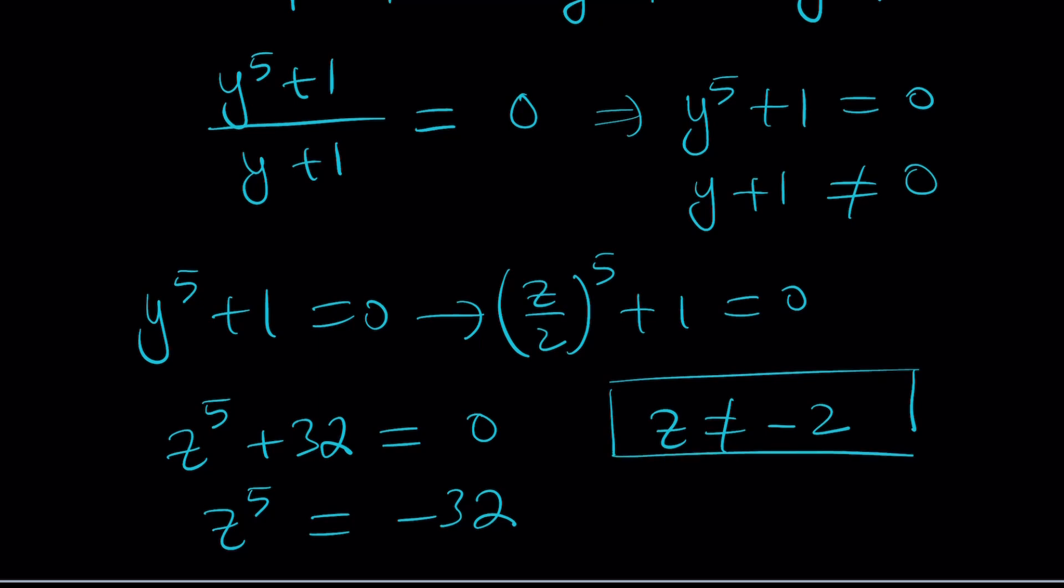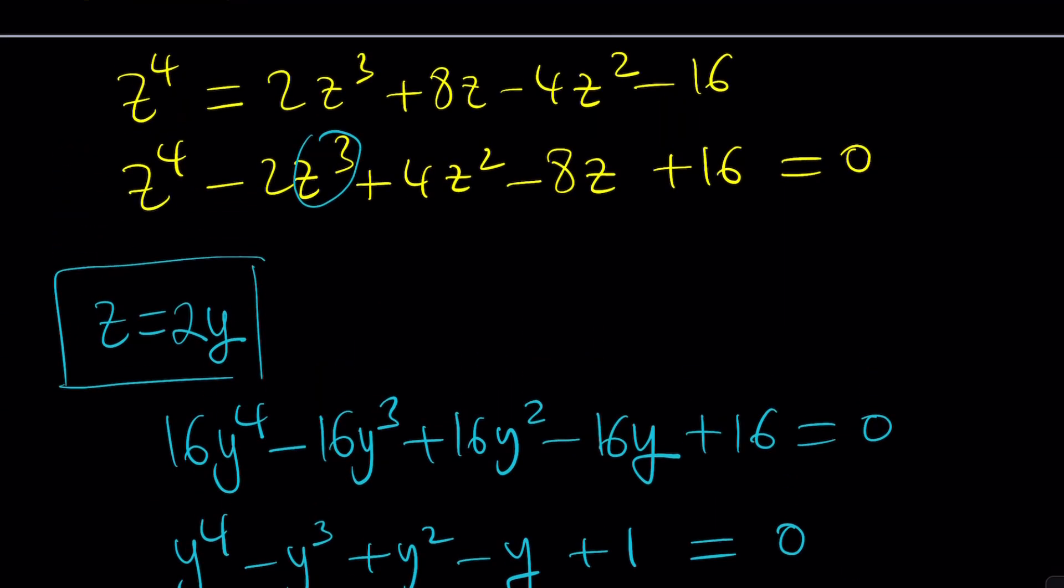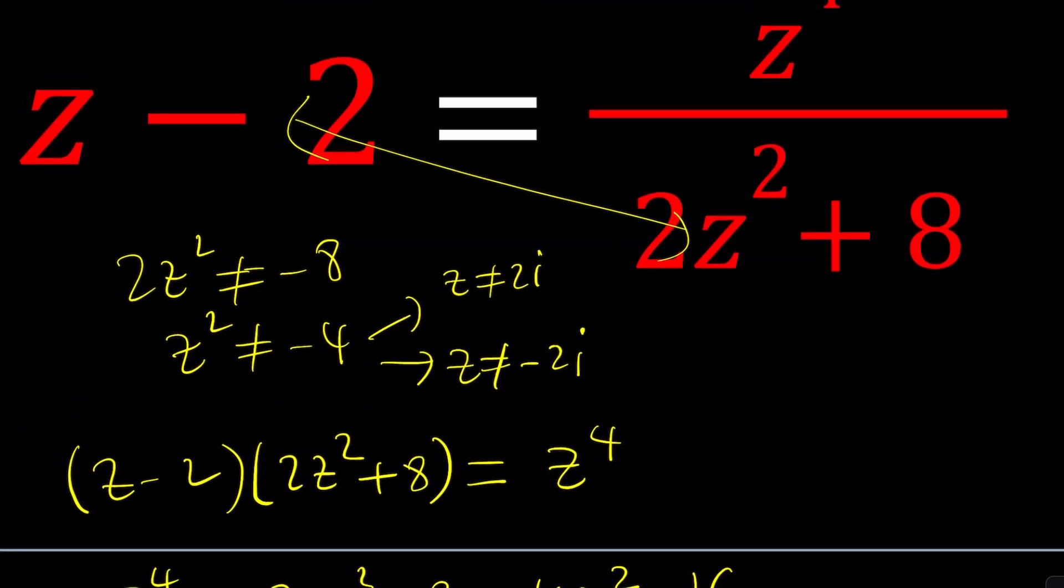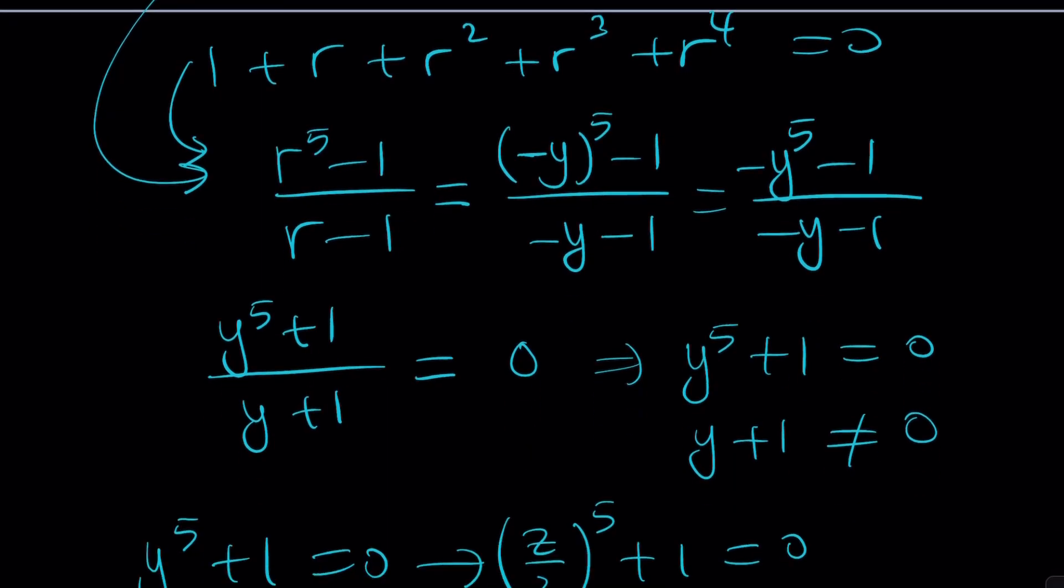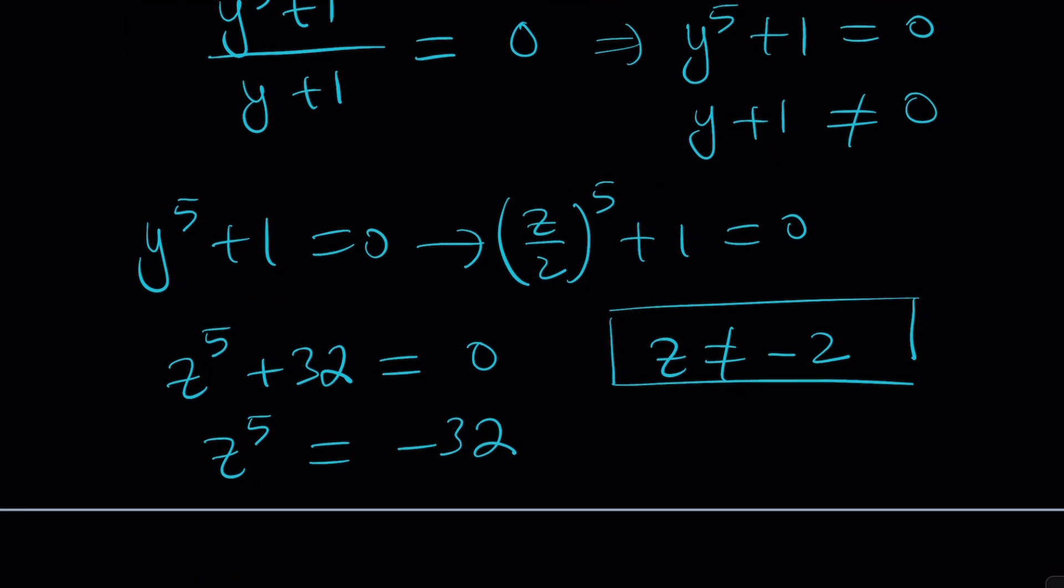Let's check what happens if z equals negative 2. If z is negative 2, then you're going to get negative 4 on the left-hand side. And on the right-hand side, you're going to get 16 divided by negative 2 squared, which is 4. 8 plus 8 is 16. Obviously, negative 4 does not equal 1. So negative 2 does not satisfy this equation. So all the fifth roots of negative 32 besides negative 2 is going to work.